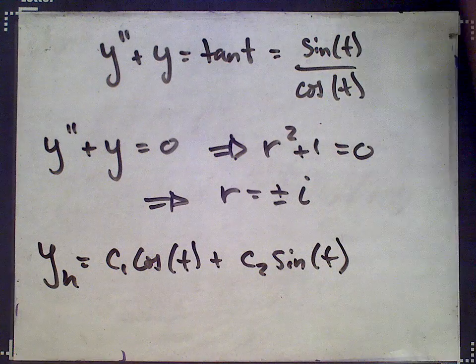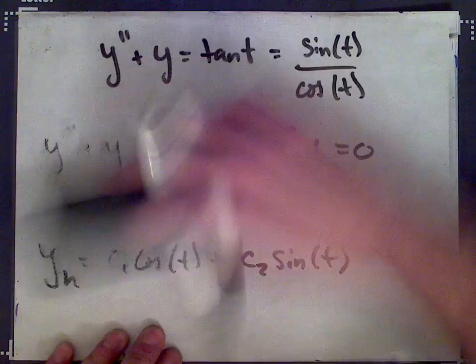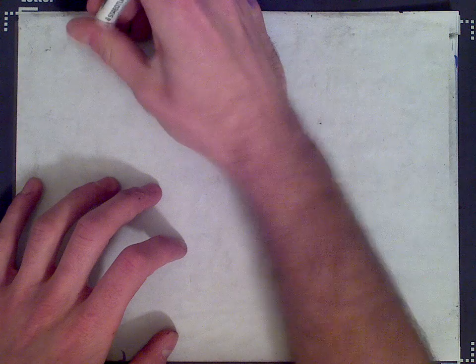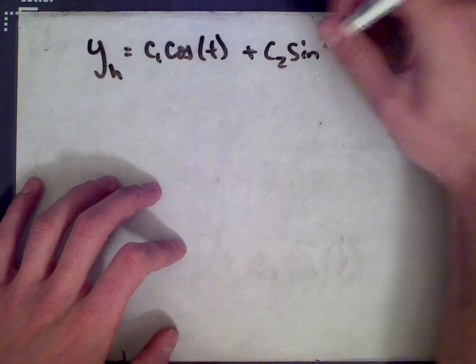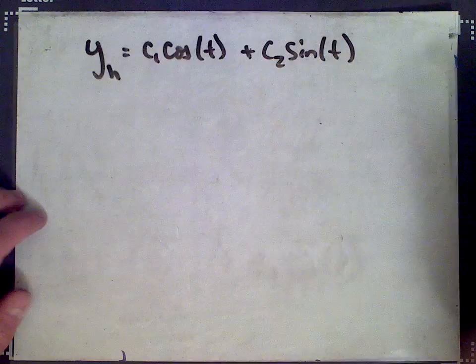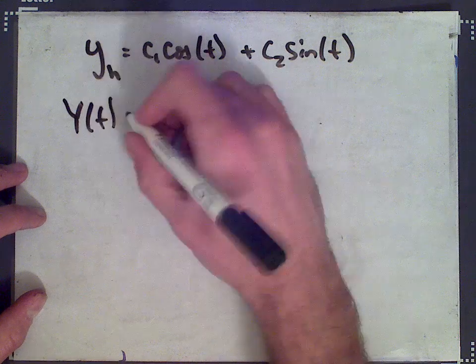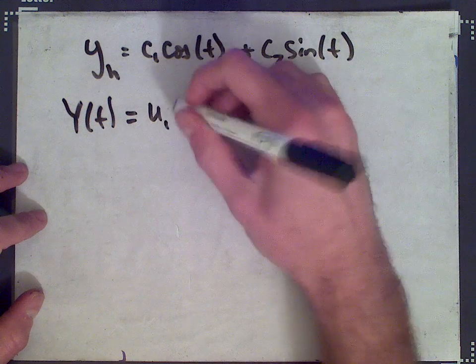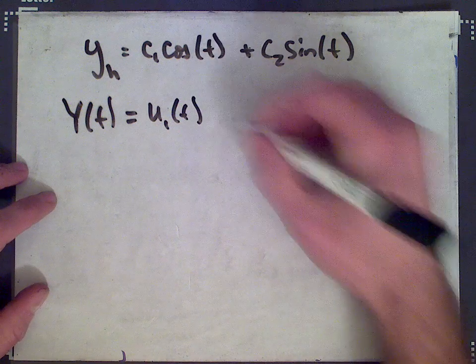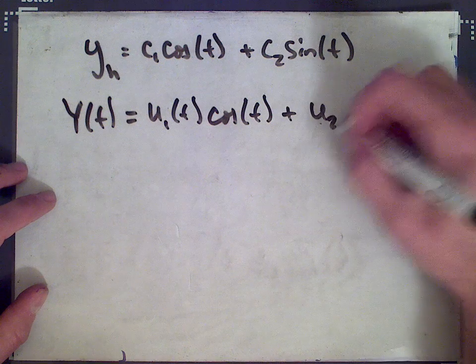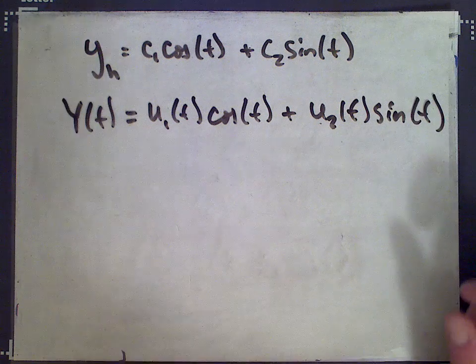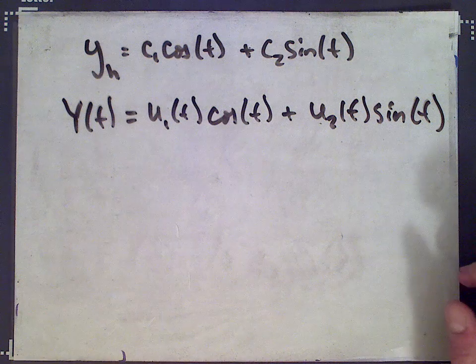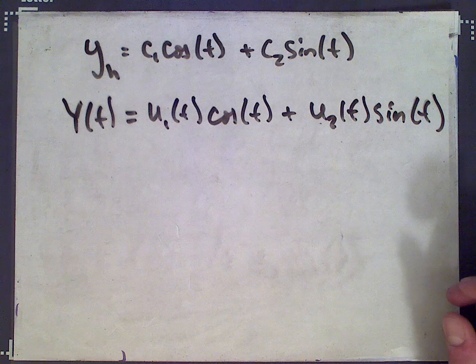Next we're going to set up a particular solution. The homogeneous solution is yh equals c1 cos t plus c2 sine t. We assume we have a particular solution of the following form: instead of c1 we put u1 of t, some unknown function of t times cos t, plus a second unknown function u2 of t times sine t. We're going to differentiate it and plug it into the differential equation and try to solve for u1 and u2.